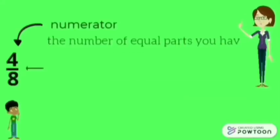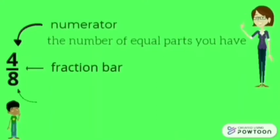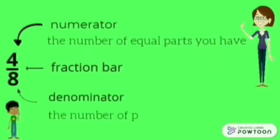4 is called the numerator, the number of equal parts we have. The line is called the fractional bar. And 8 is the denominator, or the number of parts in a whole.